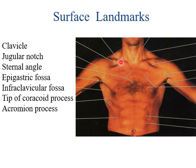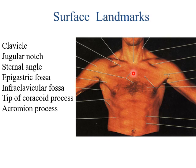The clavicle is a modified long bone. Between the two clavicles, there is a depressed area called the jugular notch. Then, 5 cm below the jugular notch, there is the sternal angle, which represents the junction between the manubrium and the body of the sternum — that is the manubrio-sternal joint.